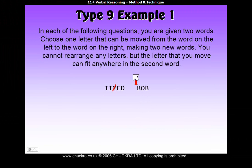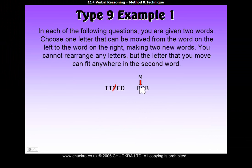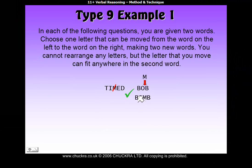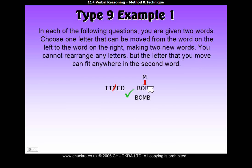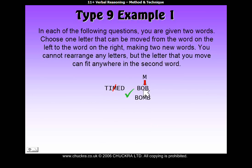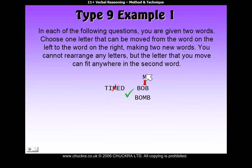If we put M at the front, we get 'mbob' — not a real word. If we move it to the second position, we get 'bmob' — also not a real word. In the third position, we get B-O-M-B, which spells 'bomb' — that is a real word. Now, remember D could also leave 'time' on the left, but we must make sure moving the letter also makes a new word on the right. If we put D at any position within 'bob,' it doesn't make a real word, so we couldn't have used D. The answer has to be M.